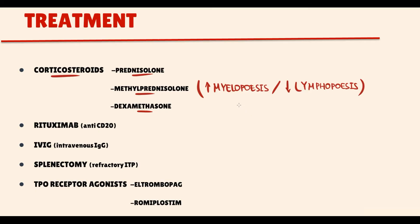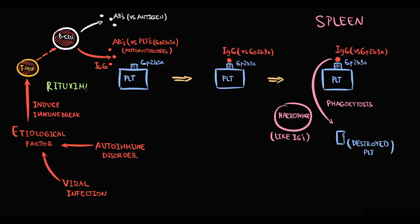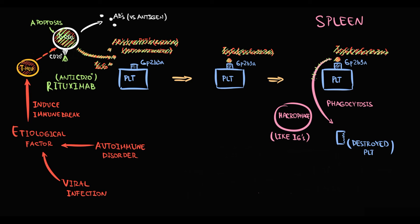The next option is rituximab, an anti-CD20 antibody. CD20 receptors are present on B cells, so rituximab targets B cells and upon binding induces apoptosis. With fewer B cells, production of immunoglobulin G against platelets decreases, phagocytosis by macrophages decreases, platelet destruction decreases, and the platelet count increases.